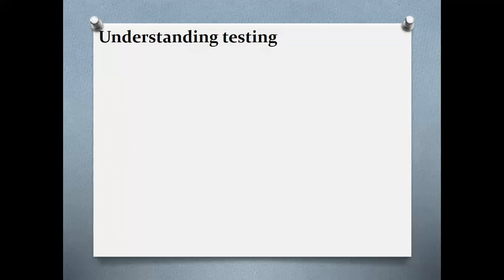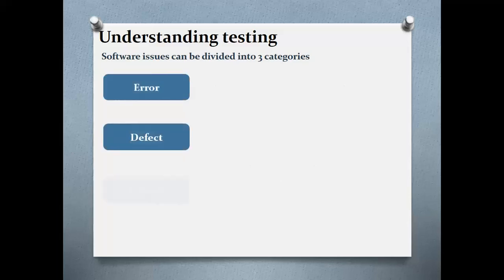To eliminate the defects in faulty software, it is important to understand the cause of defects. Faulty software is the result of errors or mistakes made while designing and building it. Most software issues can be divided into three categories: error, defect, and failure.